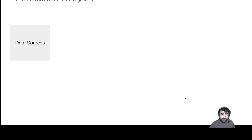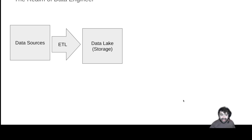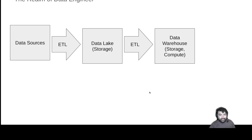The world for a data engineer looks a little bit different in this case. We're going to ETL that data from the data sources, but instead of ETLing it directly into the data warehouse — because some of that data might be unstructured, or we may not want it in the data warehouse, or we may want to stop here first — we'll generally land everything in the data lake into different types of files, whether this is object storage like Amazon S3 or on-prem distributed storage like Apache Hadoop. We then take the data from the data lake and ETL it again into the data warehousing platform.